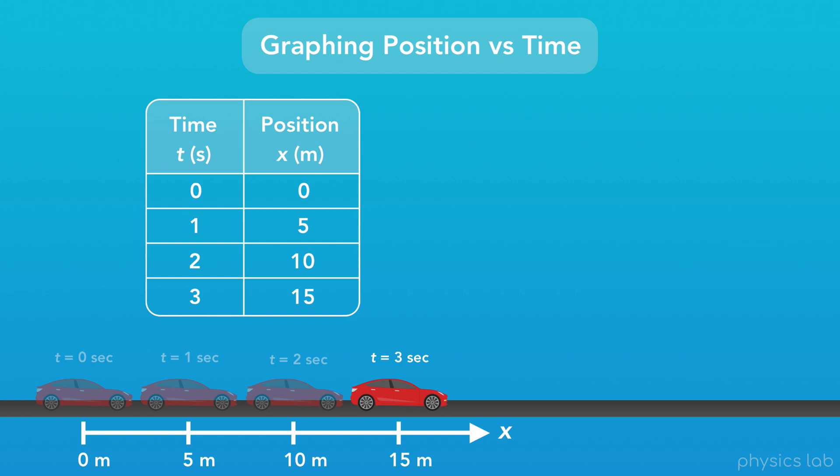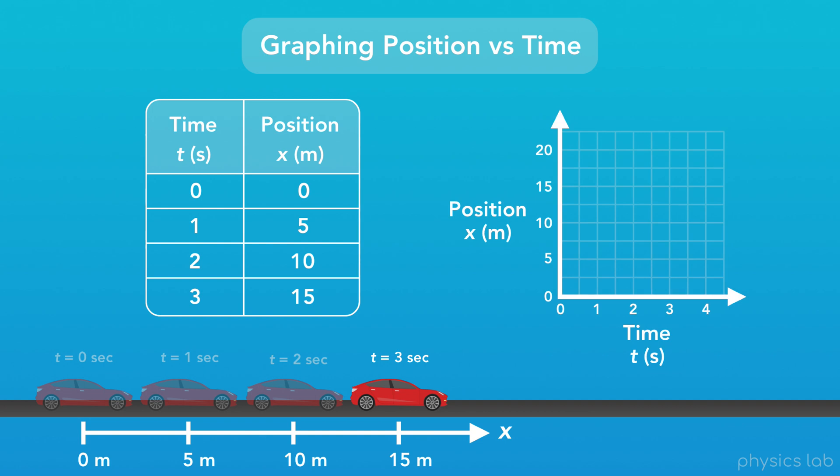Now we have a table showing the car's position at different points in time. So what would a graph of the car's position over time look like? We'll start with an empty graph where the x-axis, or the horizontal axis, represents time, and the y-axis, or the vertical axis, represents the position of the car on the road.